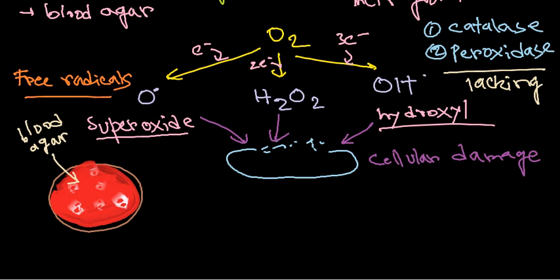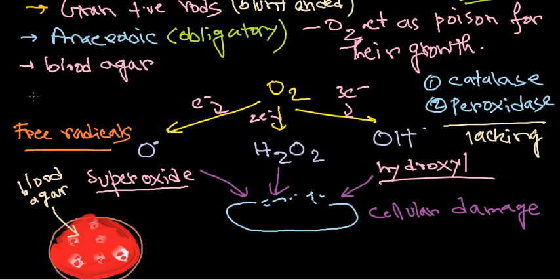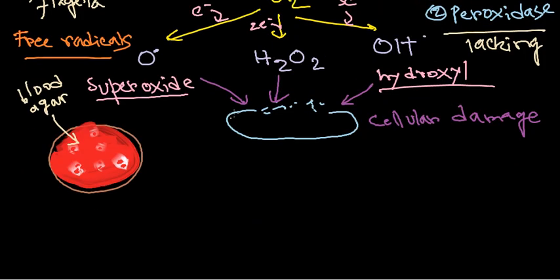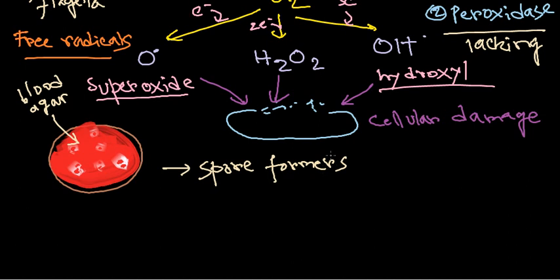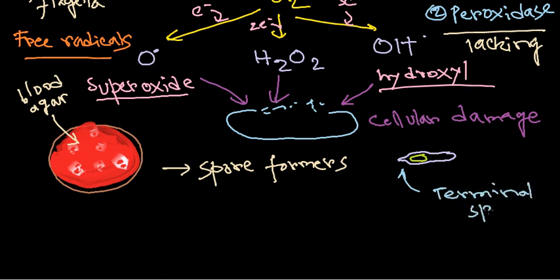These organisms also have flagella, so they are motile. Importantly, they are spore formers — they can form spores and survive in harsh or altered environments for longer periods. The spores they produce are terminal spores, located at the end of the vegetative cell, and the presence of spores inside the vegetative cell is an indication of Clostridium species.